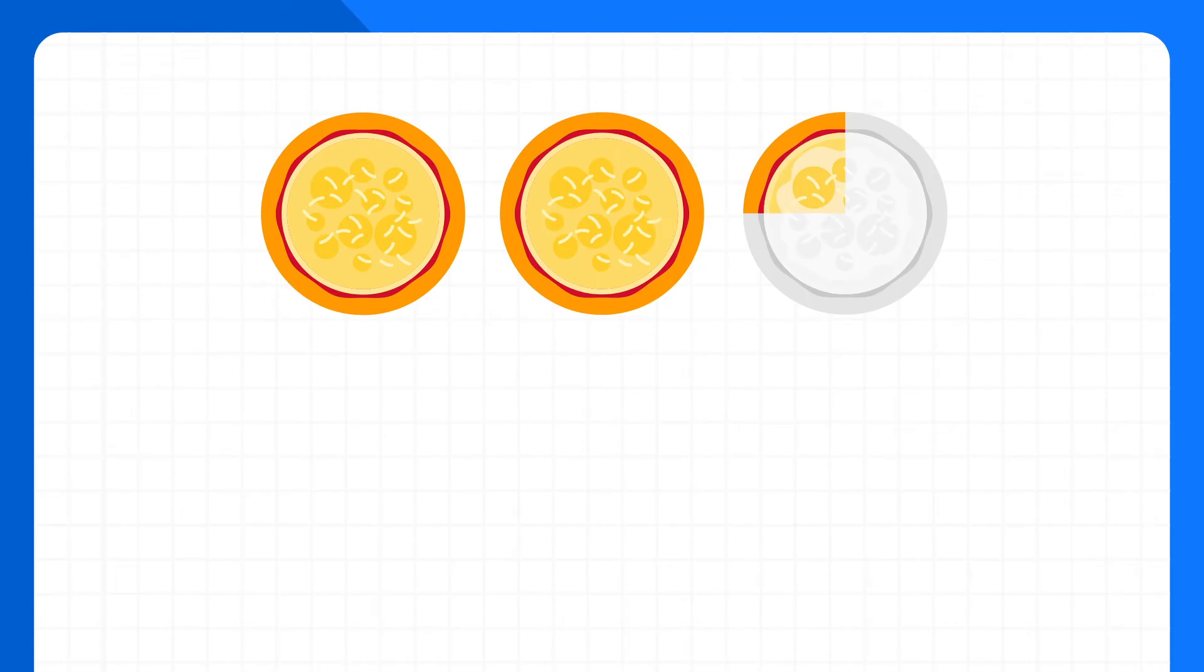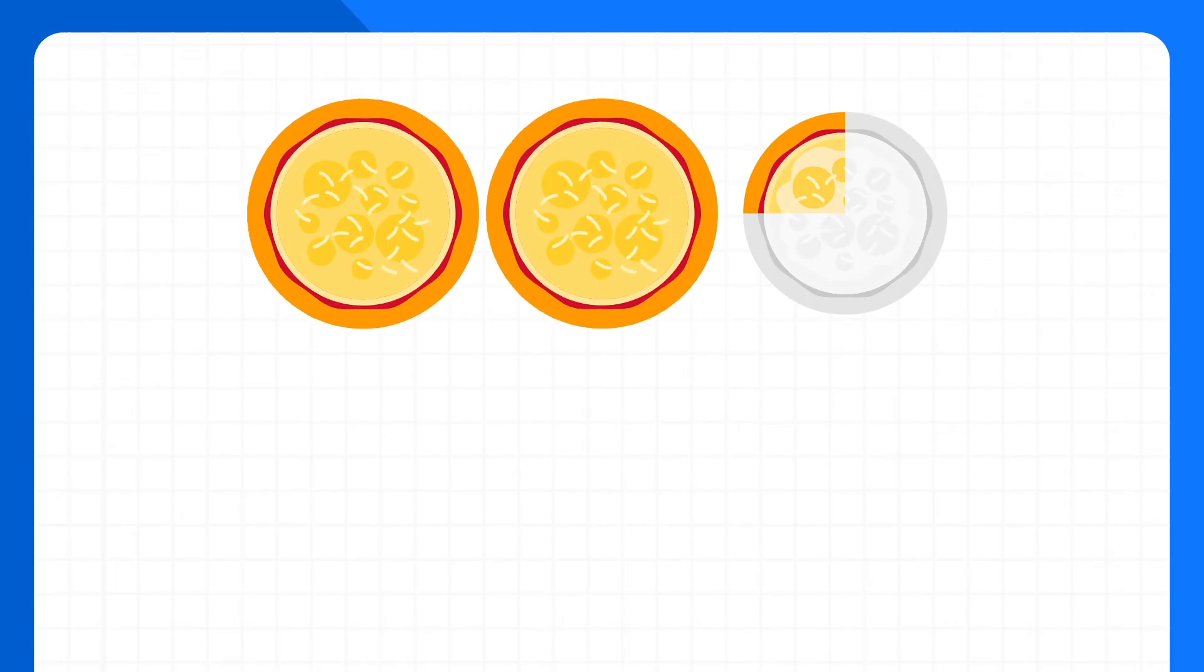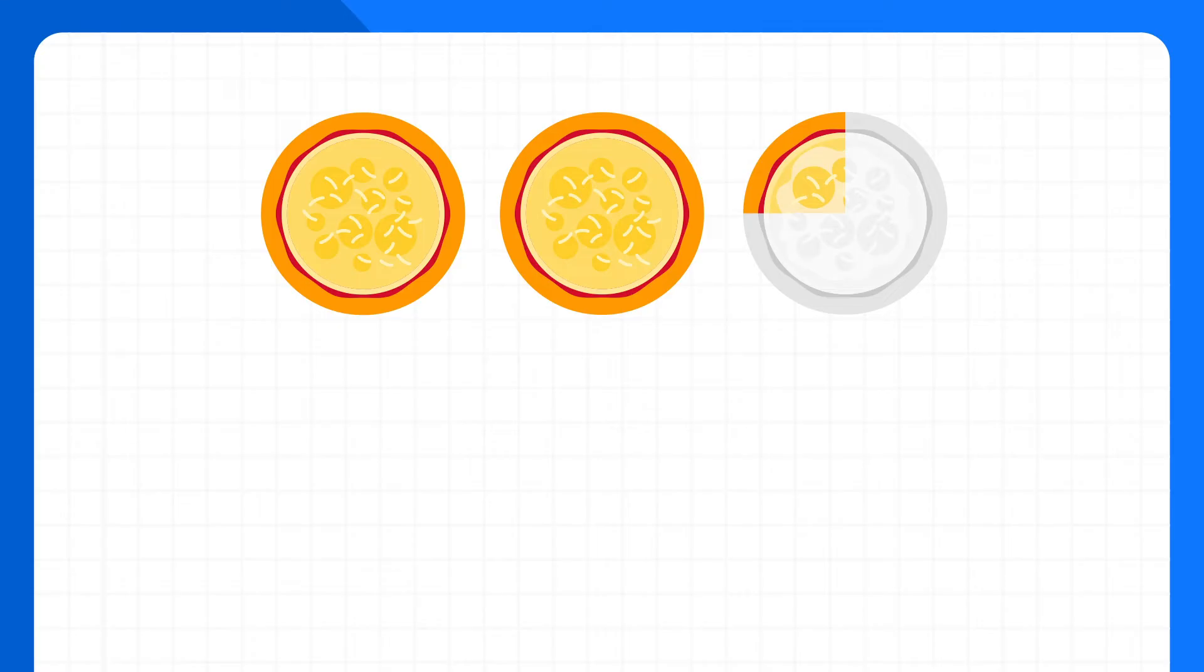But what if we wanted to describe how much pizza this is? You can see that we have both whole pizzas and a fraction of a pizza. One way we can describe this is by using a mixed number. A mixed number is a combination of a whole number and a fraction.